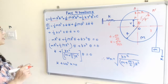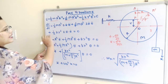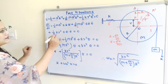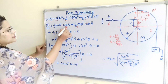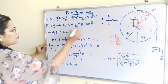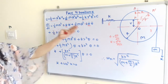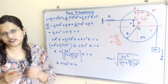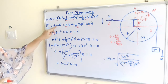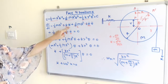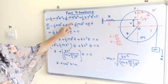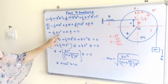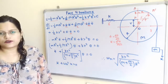Simplifying, the factor of 2 cancels throughout, and θ̇ is a common term which is taken outside the bracket and transferred to the right-hand side, giving zero. The resulting equation is: m·R²·θ̈ + (1/2)·M·R²·θ̈ + K·r²·θ = 0.